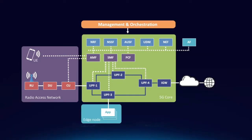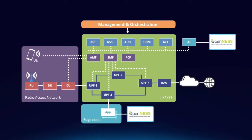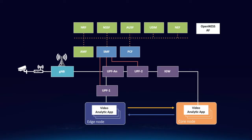Edge computing is a crucial enabler of relevant 5G KPIs, especially low latency and optimal consumption of network resources. In the 5GVINI facility site, the Intel OpenNES software toolkit offers an environment to create and deploy applications at the network edge. OpenNES can dynamically define traffic steering rules on the user plane function nodes through an application function interface, providing enhanced flexibility for the automated deployment of applications on edge nodes.